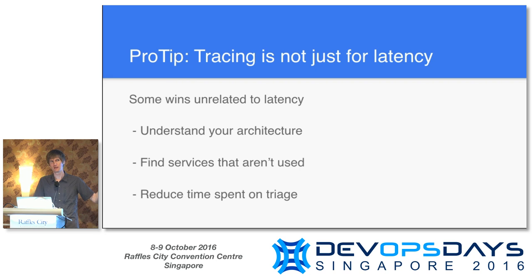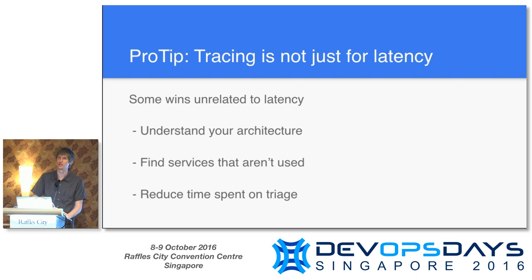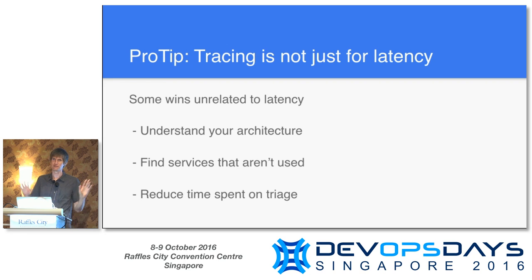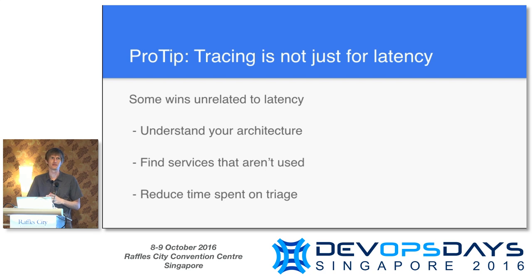For example, if you have all requests going through an edge router, you could identify services that are never actually hit. But my favorite part is reducing the time spent on triage. Technical folks can get into endless debates about hypothetical reasons why something might be taking longer than something else — arguing for hours about replication factors or whatever. But if you actually have a real trace in front of you, it ends those hypothetical discussions. The triage process gets much quicker.